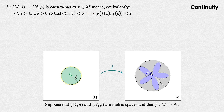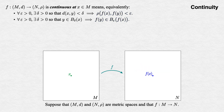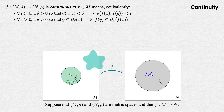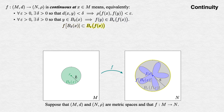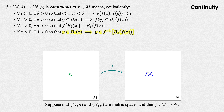We can now see open balls at work both in the domain and the codomain of f, which lets us rephrase this definition. Saying that d(x, y) < delta was just another way of saying that y is in B_delta(x) in the domain. And saying that ρ(f(x), f(y)) < epsilon was just another way of saying that f(y) is in B_epsilon(f(x)). Now we can use our definitions of images and preimages to tighten this up further. The image of the set B_delta(x) is a subset of B_epsilon(f(x)), or equivalently, B_delta(x) is a subset of the preimage of B_epsilon(f(x)).